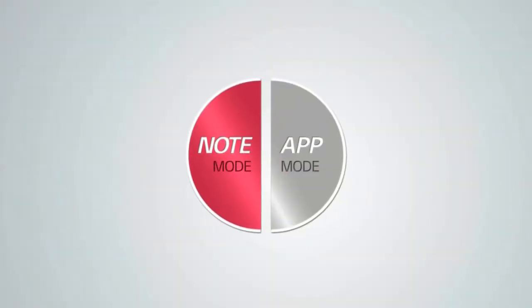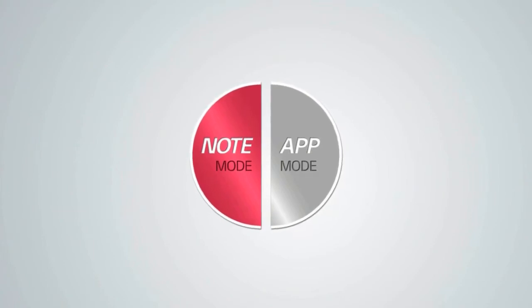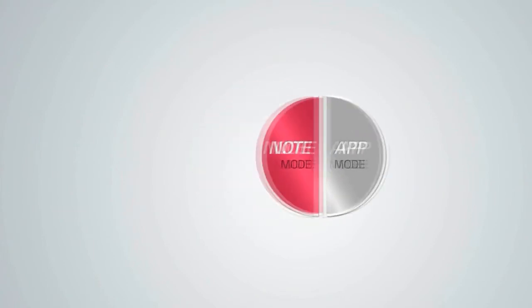Now let's take a look at the main functions. There are two modes in IWB software: note mode and app mode.